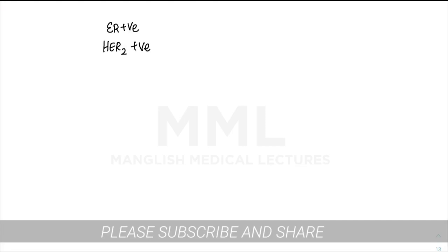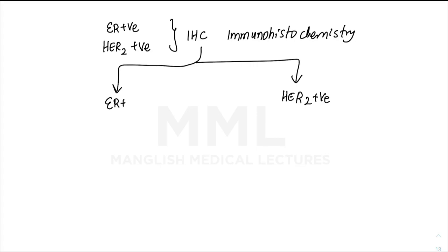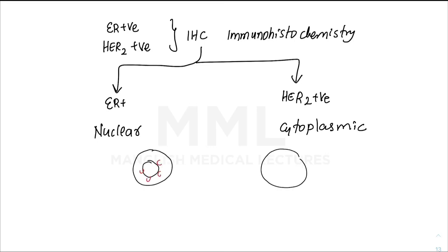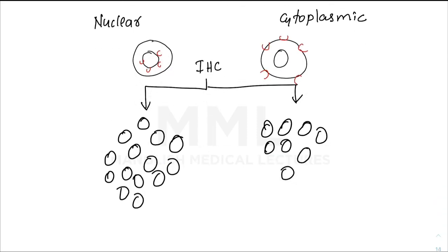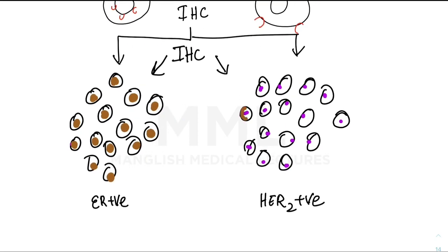To identify the molecular subtype, we perform immunohistochemistry (IHC). ER, being a nuclear receptor, shows nuclear staining (brown color) on IHC. HER2, being a cytoplasmic receptor, shows cytoplasmic staining. This staining pattern is based on the location of the respective receptors.